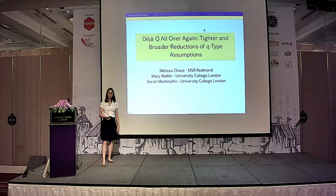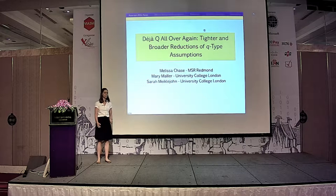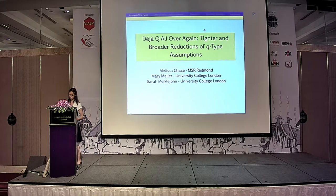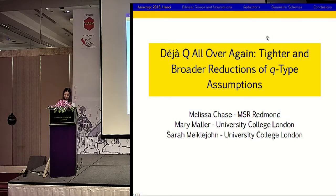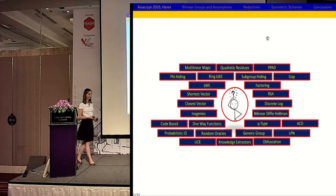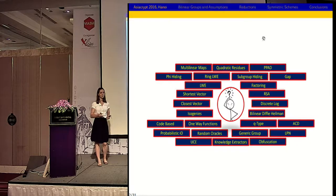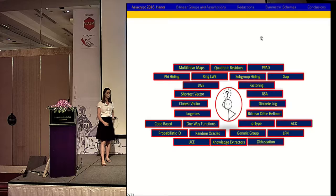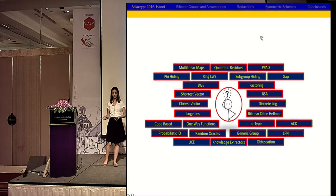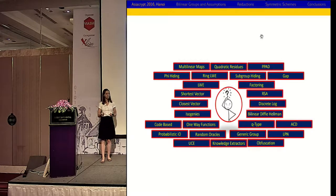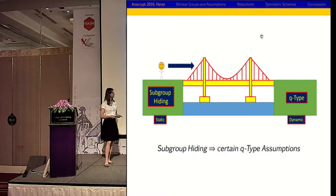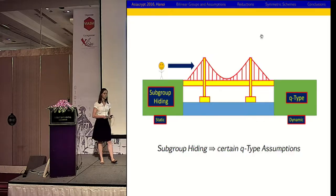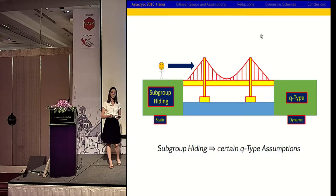Our general aim was to analyse the underlying assumptions that cryptographers are using to prove things secure. In security reductions, generally what you're trying to do is say this scheme holds because if it doesn't, then the underlying security assumption breaks. Traditionally, the underlying security assumption tended to be either RSA or discrete log. However, as cryptographers have got more adventurous with the sorts of schemes we want to cover, we have also got more adventurous with the sorts of assumptions we are willing to use. Therefore, in order to remain confident in security proofs, it is quite important to analyse these underlying assumptions.